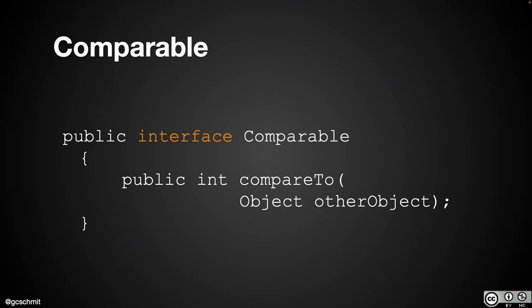We've seen this before — the String class implements the Comparable interface. That's what the compareTo method is on the String class. So we've called the compareTo method before. Today we're going to write it ourselves.